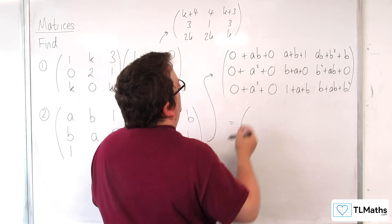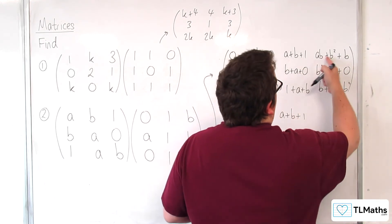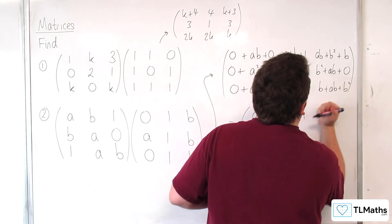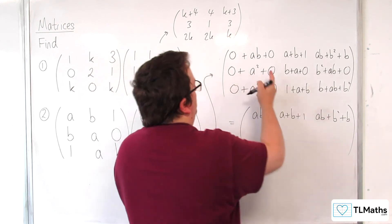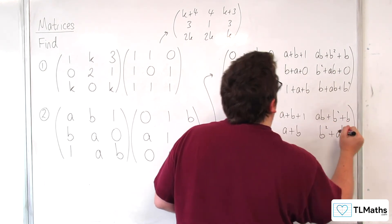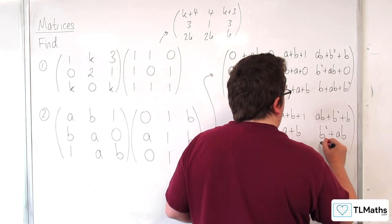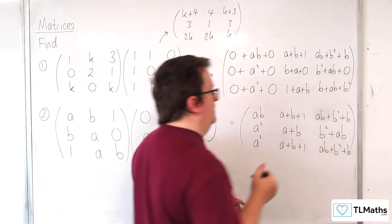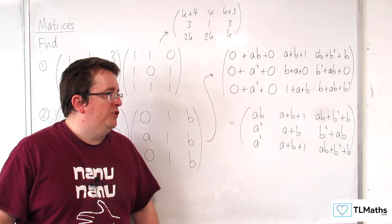So let's simplify this. So we're getting ab, a plus b plus 1. Can't simplify that any further. Then here, let's write that as b squared, plus, oh, I could have just written that, just as it is. So ab, plus b squared, plus b. No reason to mess with that. Then we've got a squared. We've got a, plus b. We've got b squared, plus ab. We've got a squared. We've got a, plus b, plus 1. And then we've got the, well, I could write it in that order as well. ab, plus b squared, plus b. Could write that in ab, plus b squared if you wanted to. But that is the end result of multiplying those two matrices together.